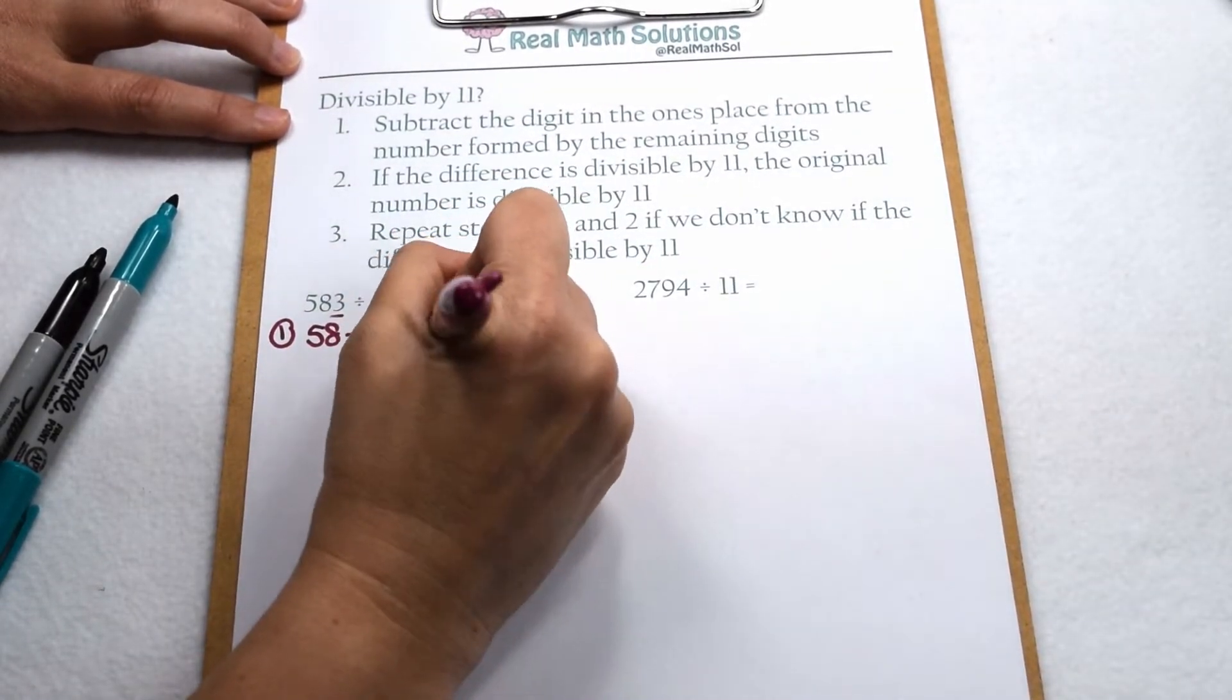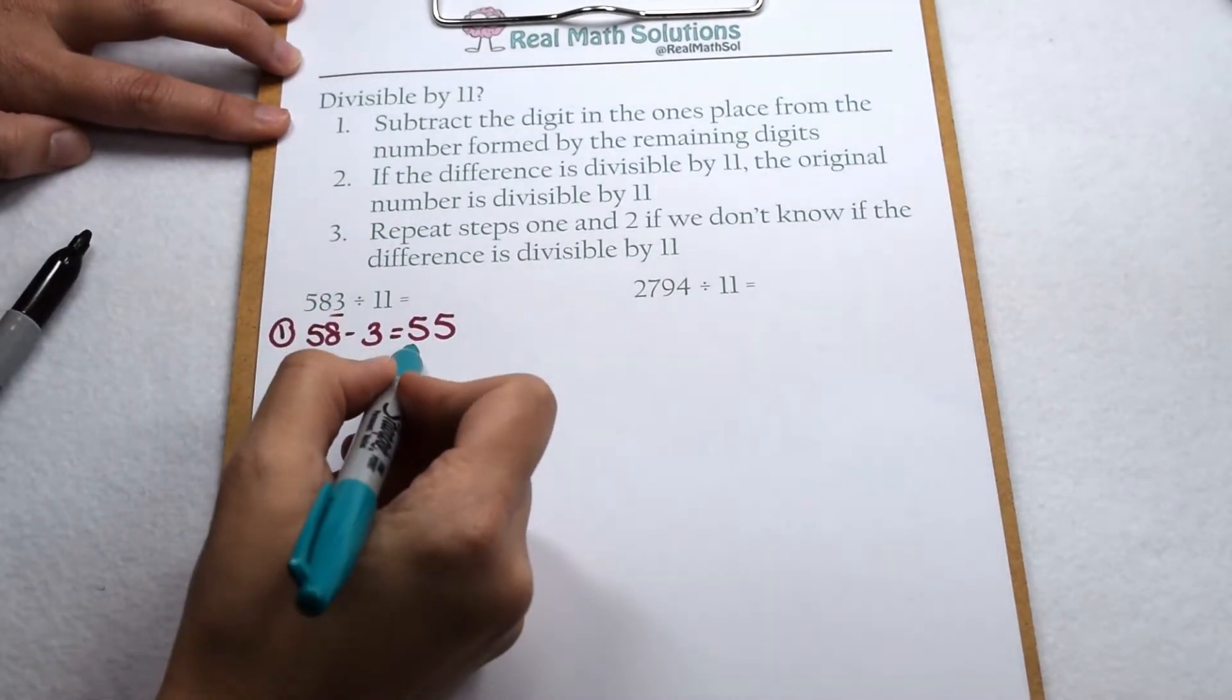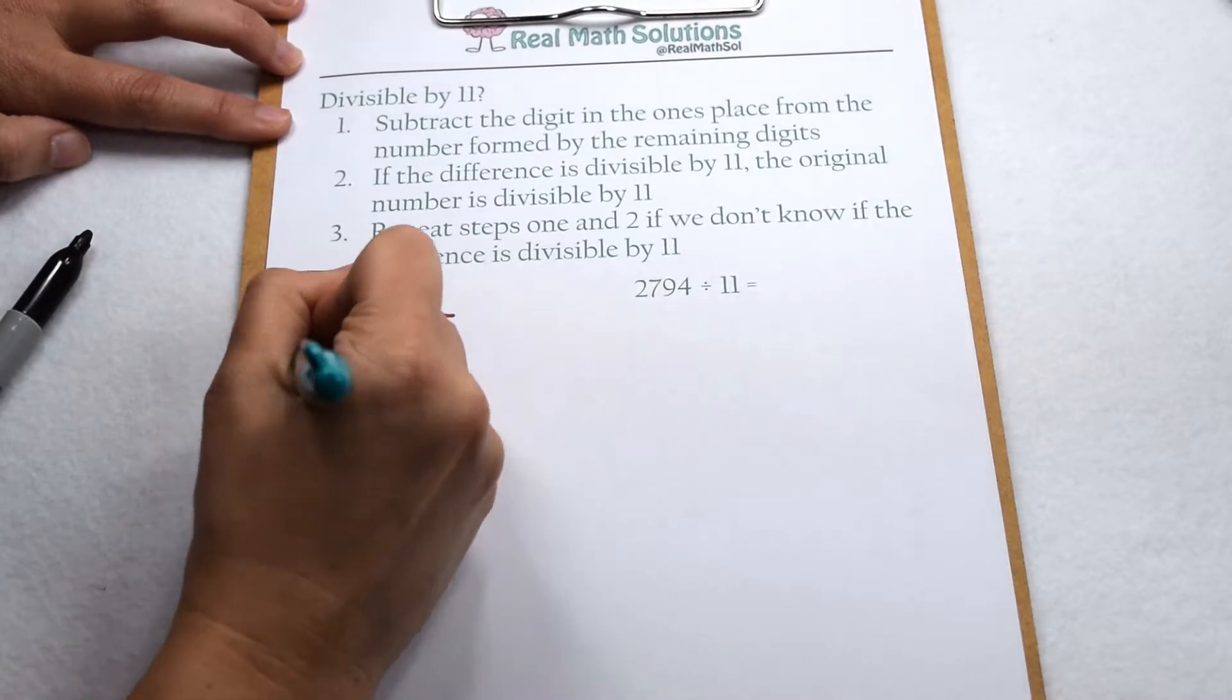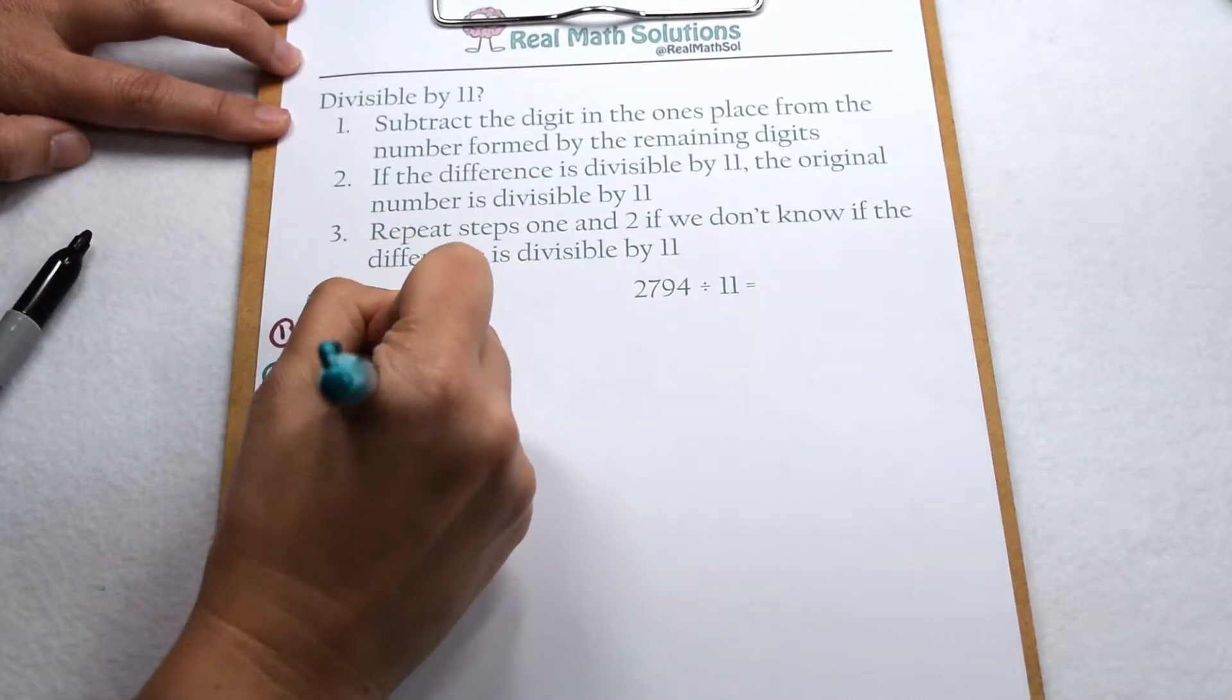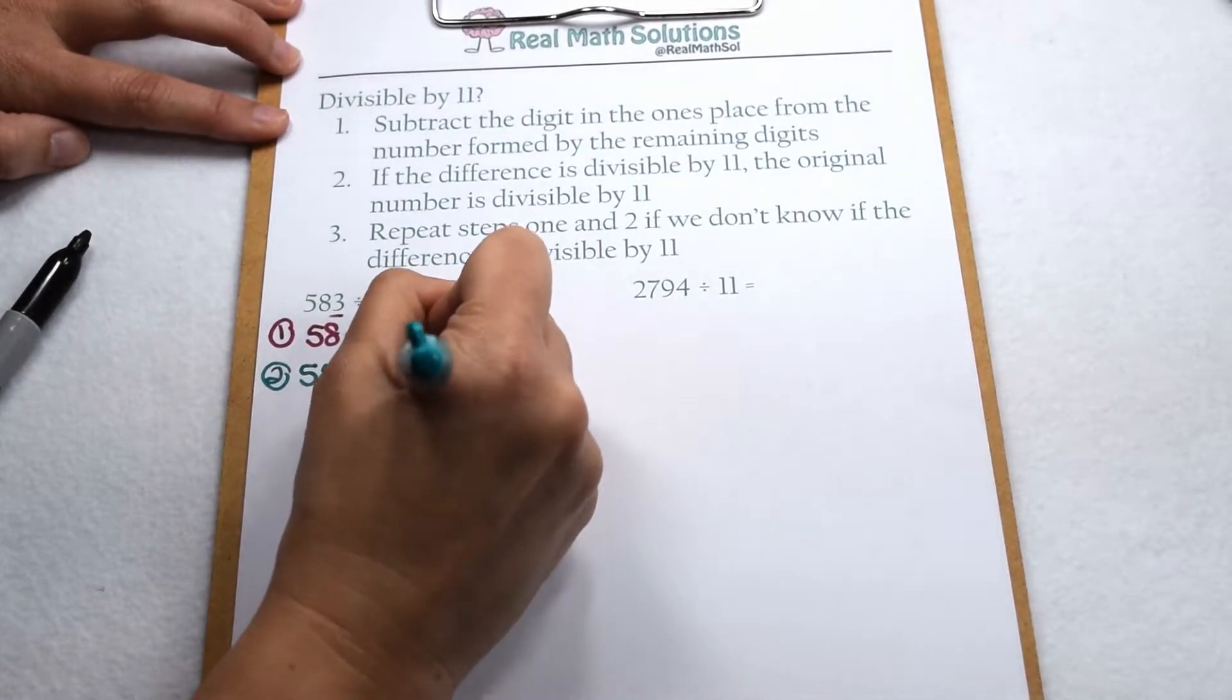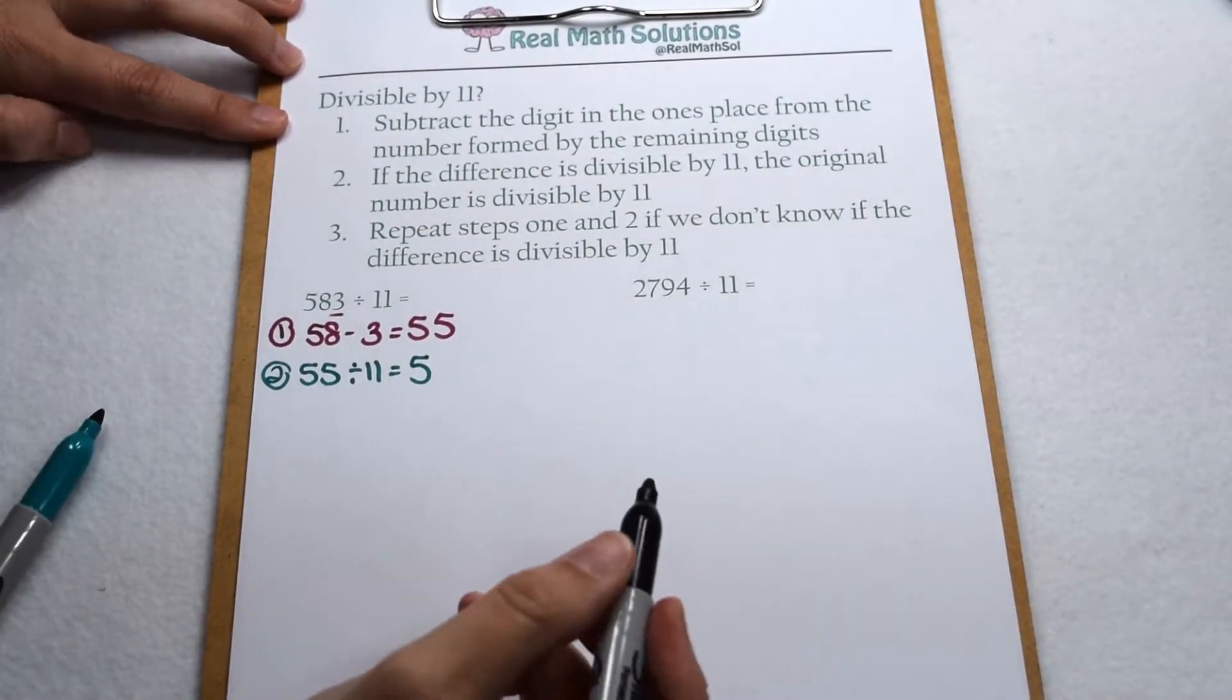58 minus 3 leaves me with 55. If my remaining value is divisible by 11, then that tells me my original value is going to be divisible by 11. We know that 55 is going to be divisible by 11. It has the same digits in the ones and the tens place. 55 divided by 11 comes out to be 5.